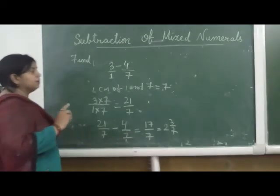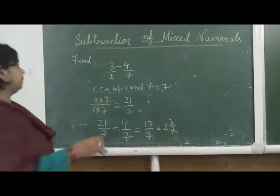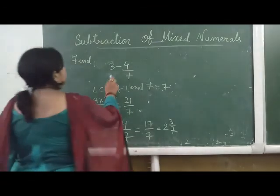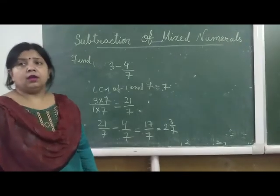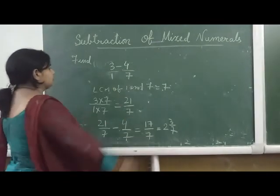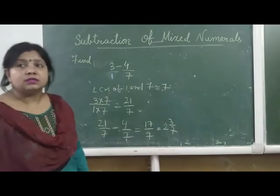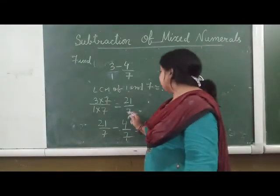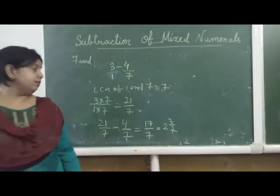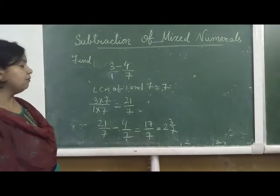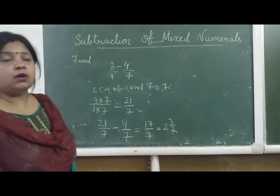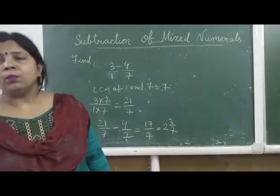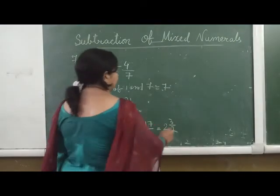So for 3 by 1 minus 4 by 7: the denominators are different but 1 is hidden. The LCM of 1 and 7 is 7. We change 3 by 1 into an equivalent fraction to get 21 by 7. Then we subtract 21 by 7 minus 4 by 7 to get 17 by 7 and change that into a mixed fraction: 2 whole 3 by 7. That is your answer.